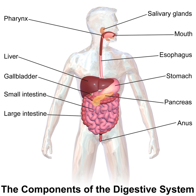Digestion is the breakdown of large and soluble food molecules into small water-soluble food molecules so that they can be absorbed into the watery blood plasma. In certain organisms, these smaller substances are absorbed through the small intestine into the bloodstream.